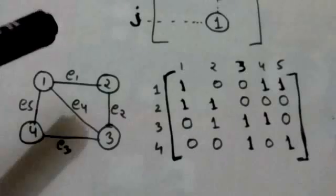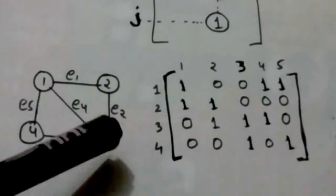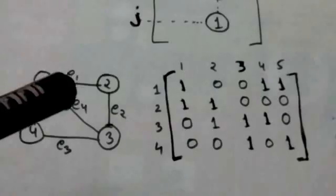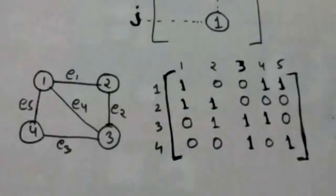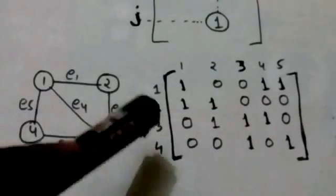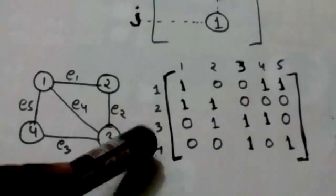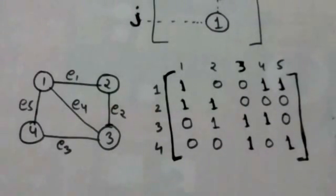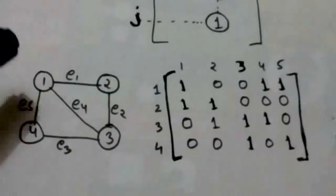Now, in this graph edge E3 joins vertex 3 and vertex 4. Therefore, in the incidence matrix the entry at the third row and third column and the entry at the fourth row and third column are both one, and all other entries in the third column are zero.